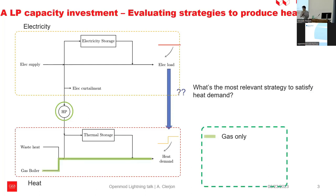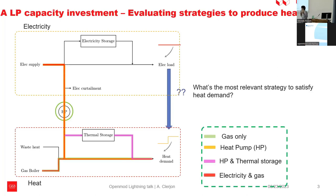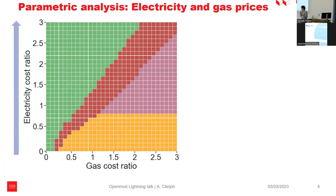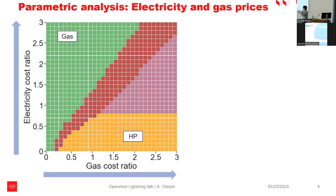There are different strategies. Heat can either come directly from gas production or from electricity through the heat pump. It can also go by the thermal storage, and even come from both gas and electricity. I'm presenting here some results where we're varying both electricity and gas prices. We observe that when electricity cost is rather high, we use only gas. When electricity is cheap, we use only electricity; in the middle, both. And at some point, we can also use thermal storage and electricity.